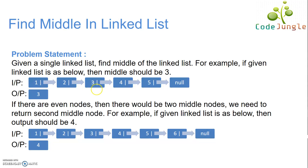Coming to the next scenario — this linked list has a total of 6 nodes. We need to find the middle element here. Both 3 and 4 are valid candidates; however, we consider 4, as 4 is the next element in the given list of candidates.